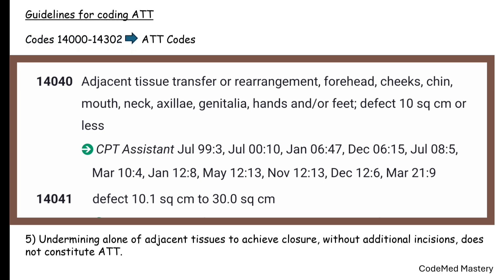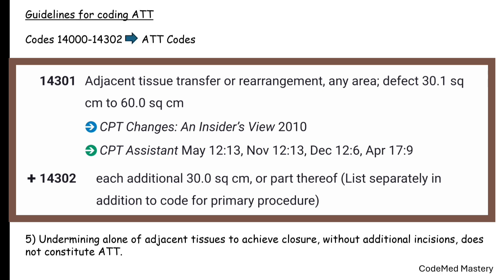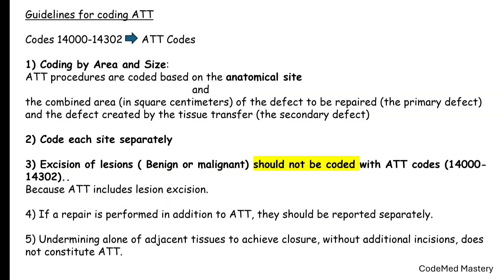Code 14060 is for ATT or rearrangement at anatomical locations: eyelid, nose, ears, or lips — defect ten square centimeters or less. Code 14061 is for defect 10.1 to 30 square centimeters. Code 14301 is for ATT or rearrangement, any area, defect 30.1 to 60 square centimeters. Add-on code 14302 is for each additional 30 square centimeters or part thereof, used in conjunction with 14301.